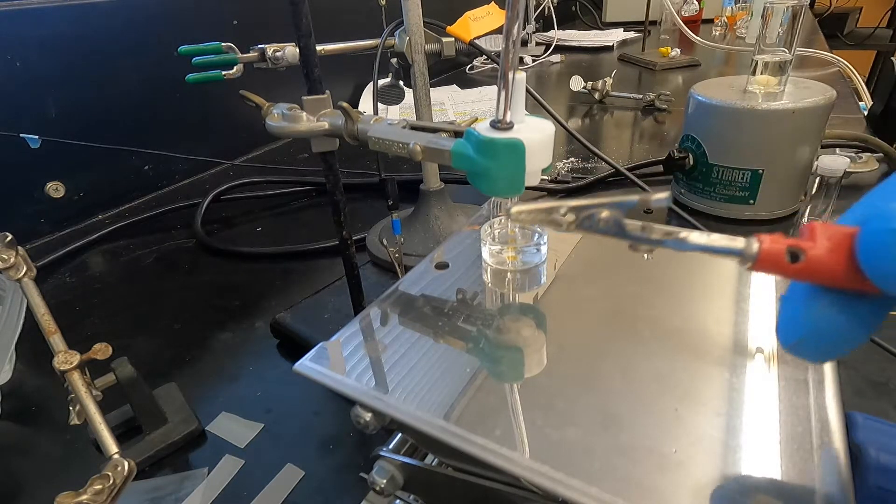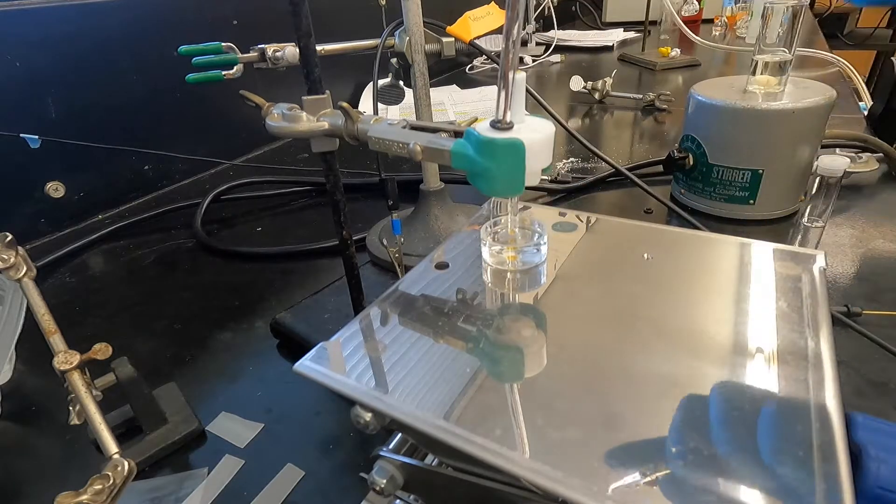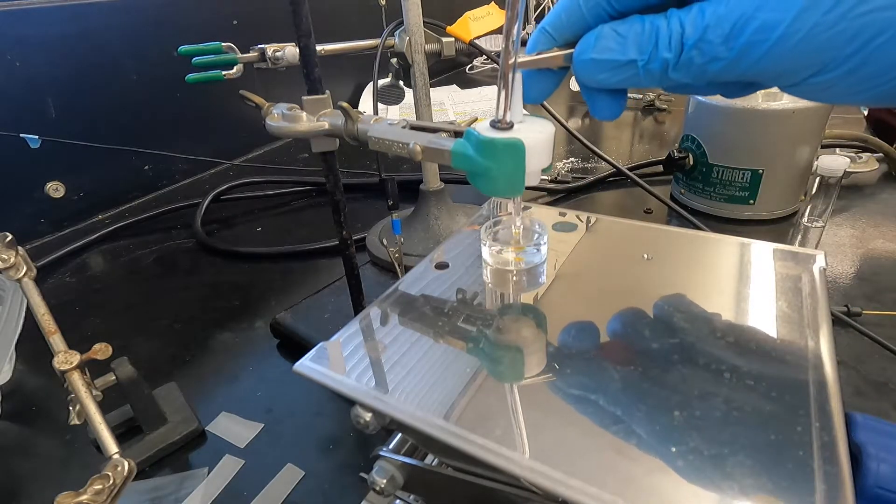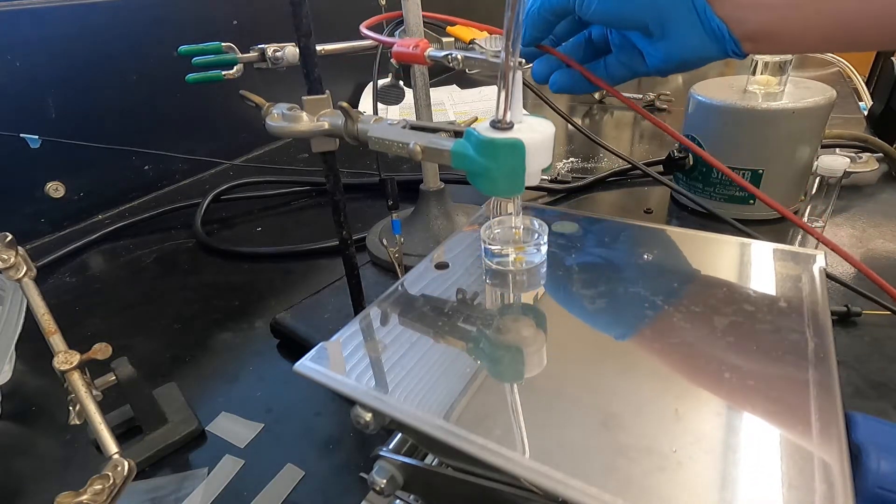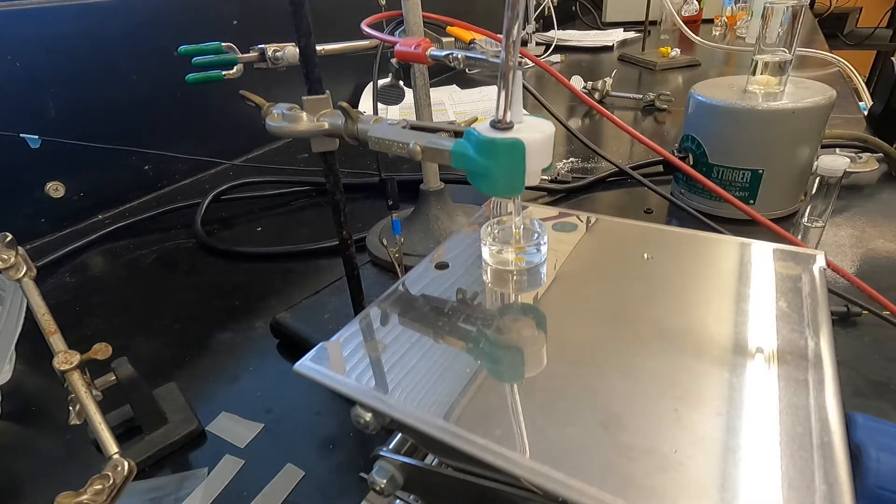You're going to hook up the working and working sense electrodes to your reference electrode and then loop that out of the way so it doesn't touch the counter electrode.